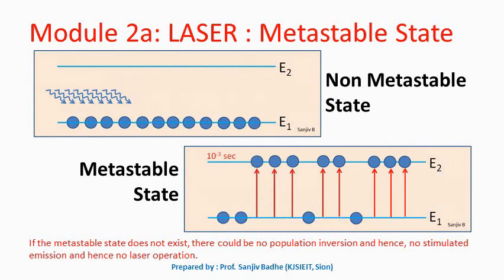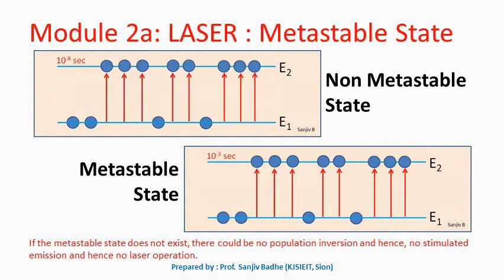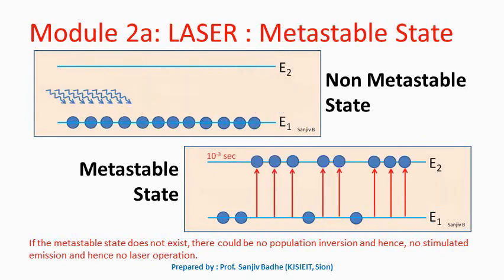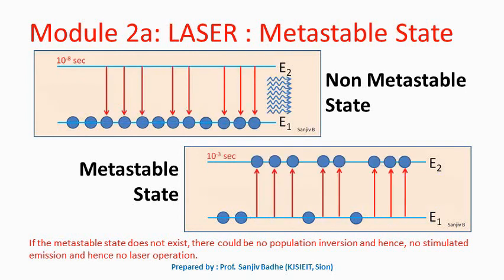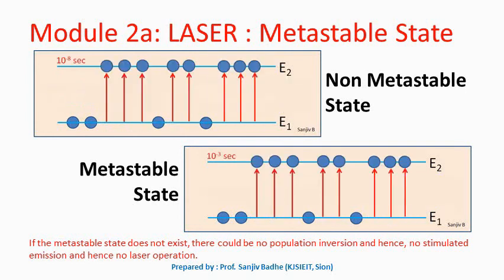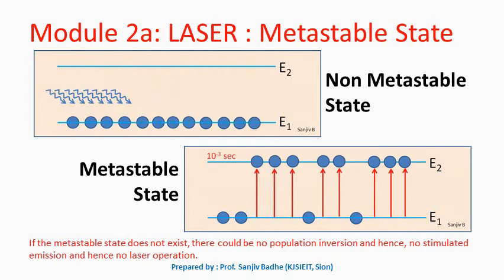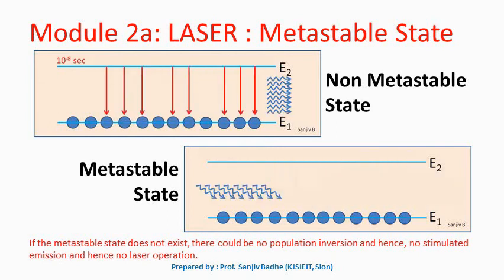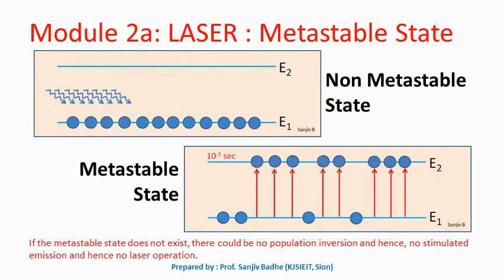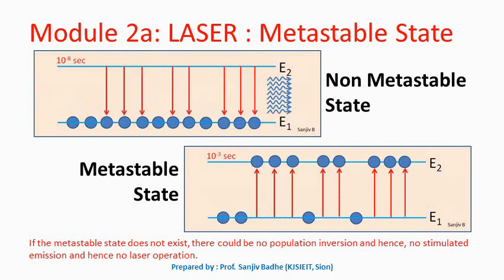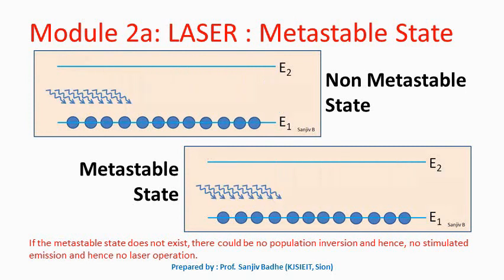Atoms of each and every element may not have such a metastable state. To get a laser beam, we need to find the element whose atoms are characterized with such a metastable state. Such elements whose atoms are characterized with a metastable state are called the active medium. These materials can be used for the production of a laser beam.